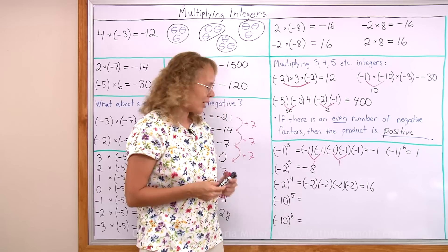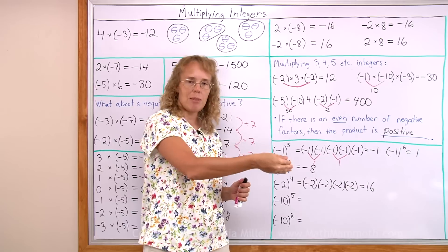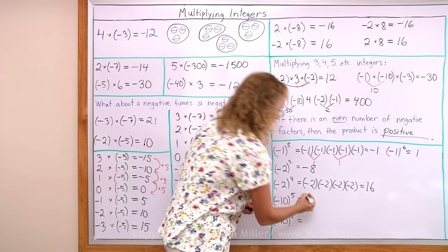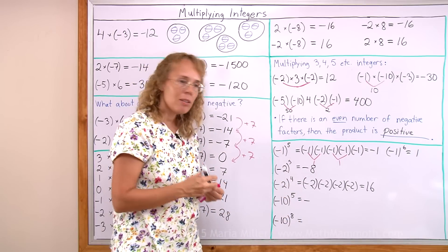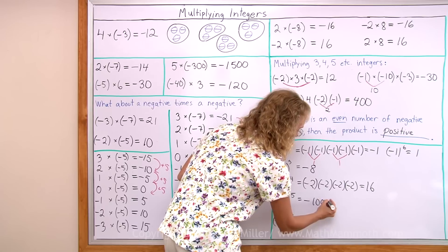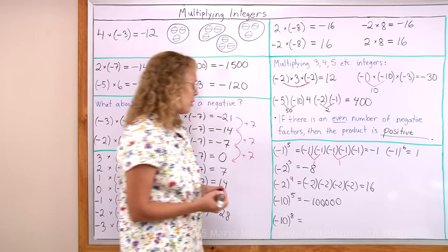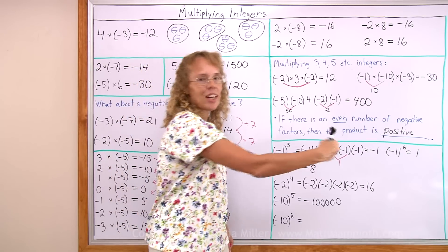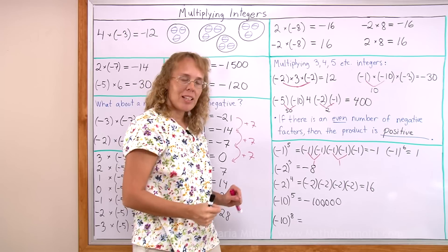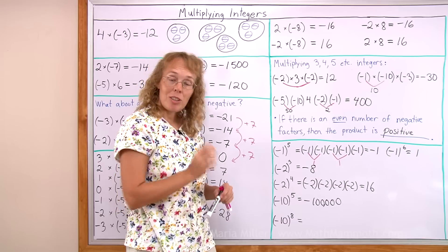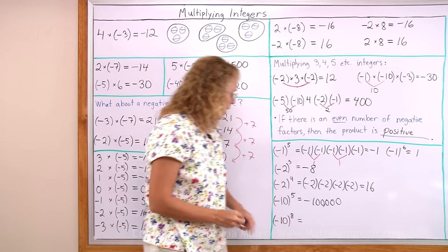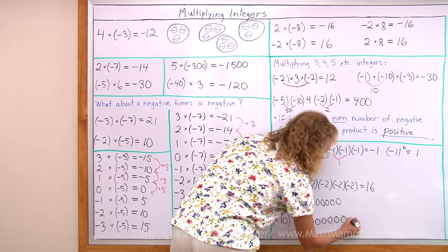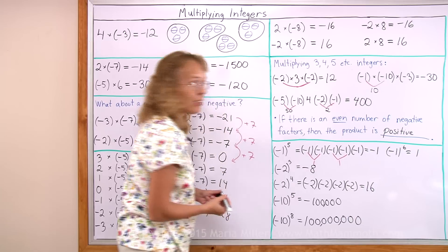Negative 10 to the 5th power — negative 10 multiplied by itself 5 times. That's an odd number of factors, so there's going to be a negative outcome. Other than that, I just think of 10 to the 5th power, which is 1 followed by five zeros — so negative 100,000. Now lastly, negative 10 to the 8th power. There are going to be 8 factors — an even number — so you can pair them and get all positive answers. The product is positive, and 10 to the 8th power is 1 followed by 8 zeros, so we get 100,000,000 as a result.